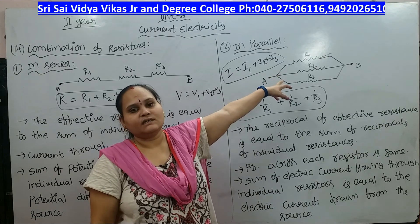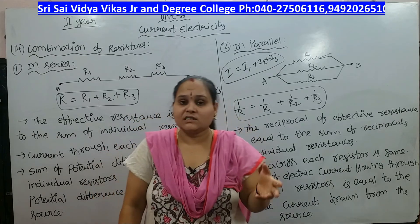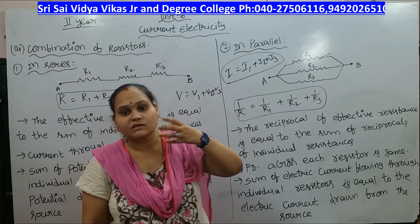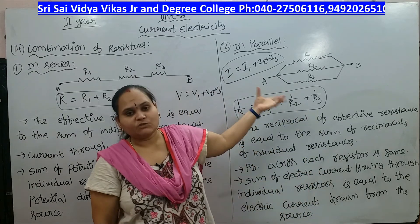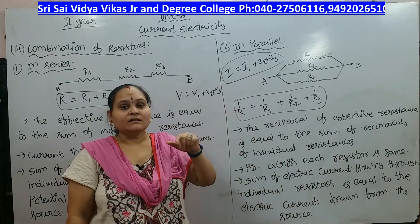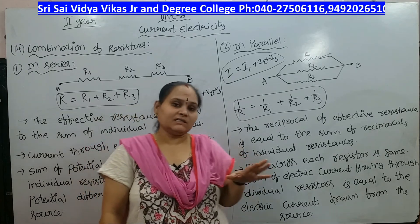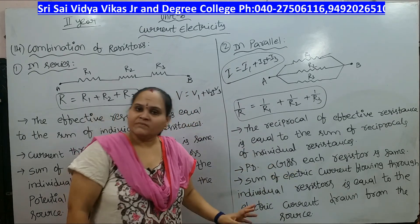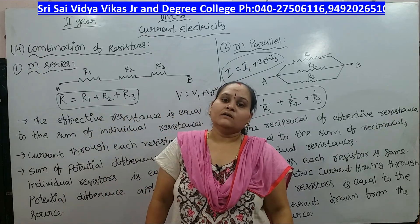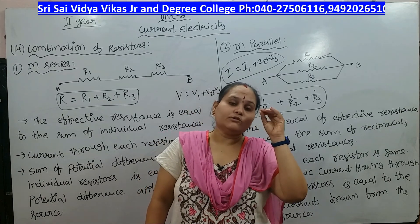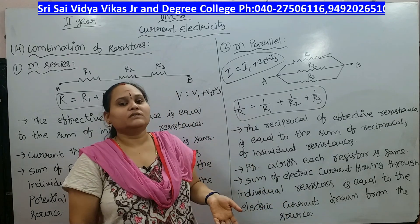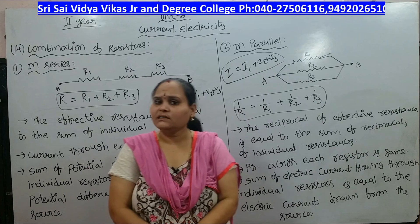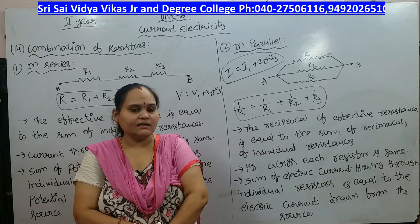In parallel combination, the reciprocal of the effective resistance equals the sum of reciprocals: 1/R = 1/R1 + 1/R2 + 1/R3. The potential difference across each resistor is the same, and the total current I drawn from the source equals I1 + I2 + I3, the sum of currents through R1, R2, and R3. Next we will discuss cell combination.